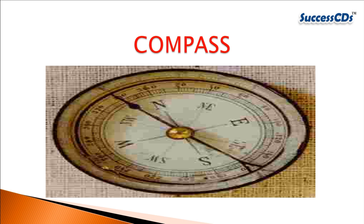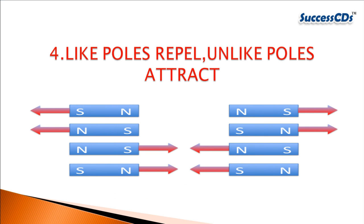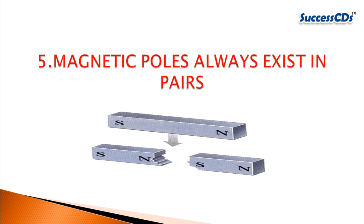Like poles repel and unlike poles attract each other. If two bar magnets are kept end to end, you will find that either the two magnets will stick to each other with a lot of force, or it will be difficult to bring them together. This is because the north pole of one magnet attracts the south pole of the other, or the north pole of one magnet strongly repels the north pole of the other.